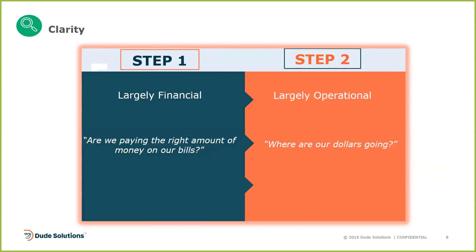Step two brings us into the operational side: where are dollars going? If I can identify waste somewhere, I want to be able to know where that is. This is scalable — whether it's for one building or a portfolio of facilities. Being able to say, for certain times of year I'm going to use and spend the most on utilities, for certain times of the day — basic question: where are my dollars going? We're not solving right now, we're just getting the good, the bad, and the ugly.